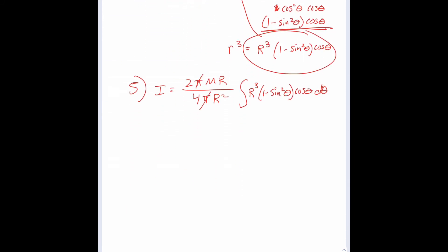π and π cancel out, r cancels with r², 2 over 4 is 1/2. I equals capital M over 2r, pull out the r³, so times r³ times the integral of 1 minus sine²θ cosine θ dθ. We can do u-substitution. Before we get to u-sub, we need to work out our limits of integration.